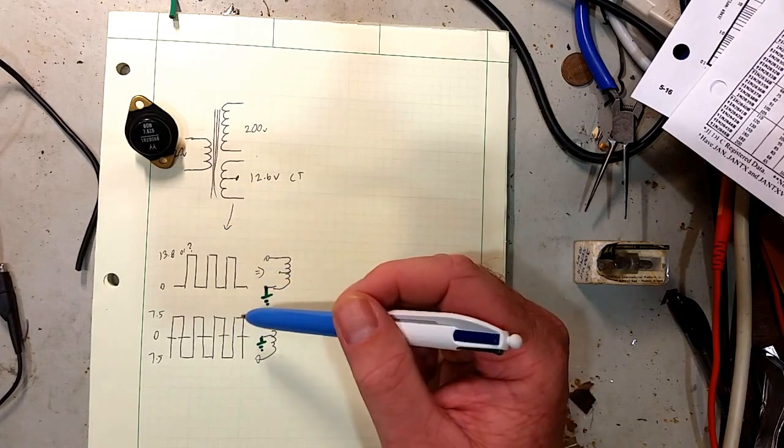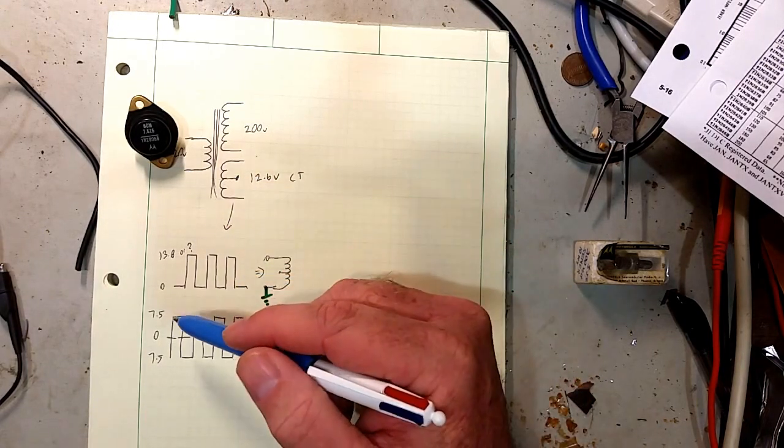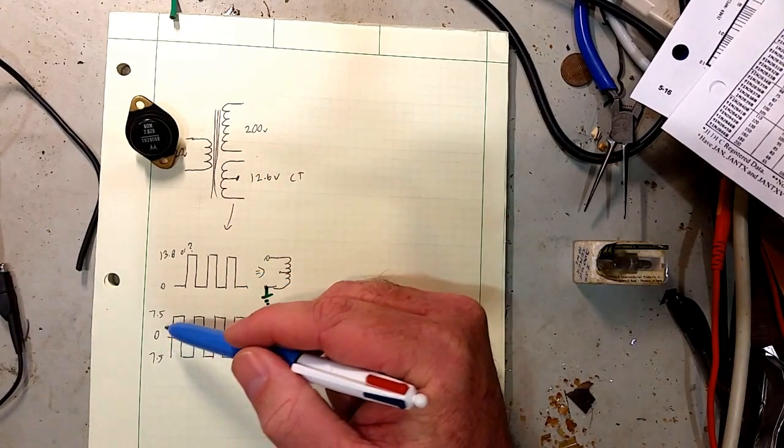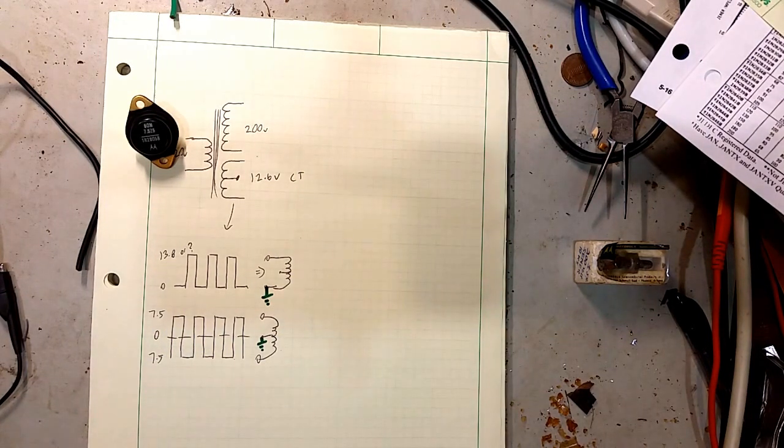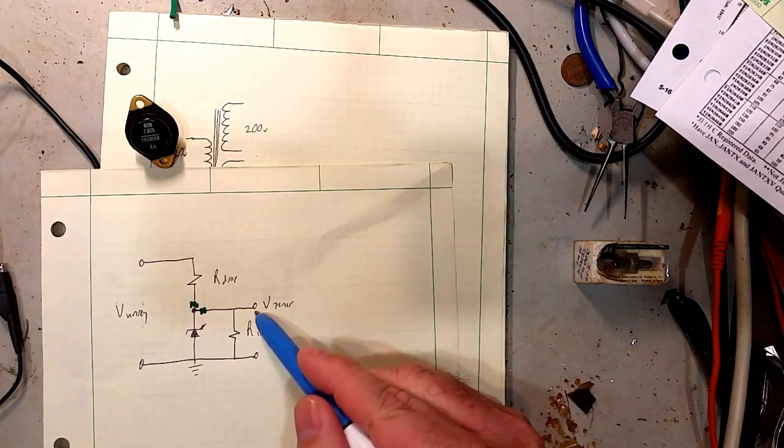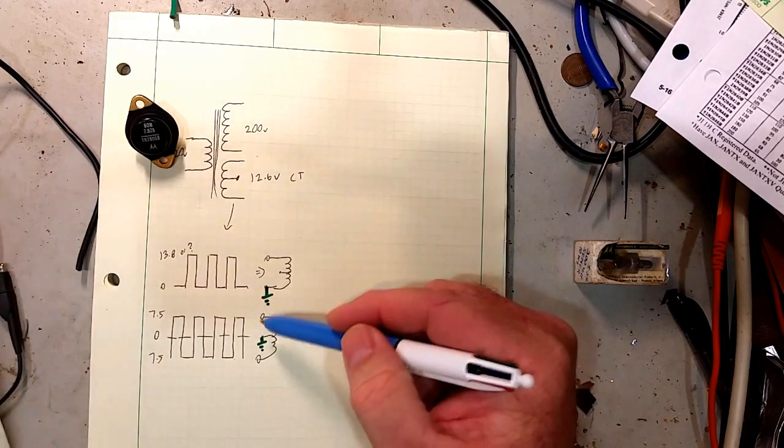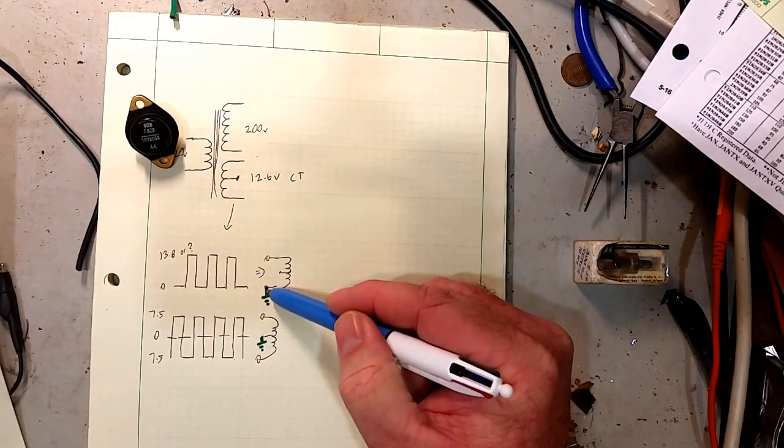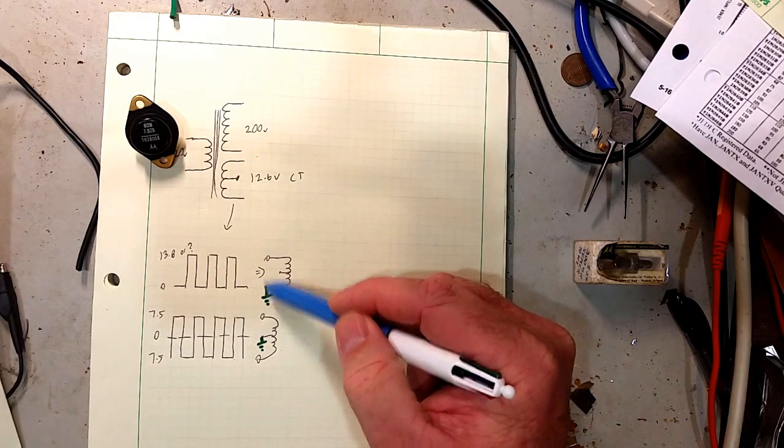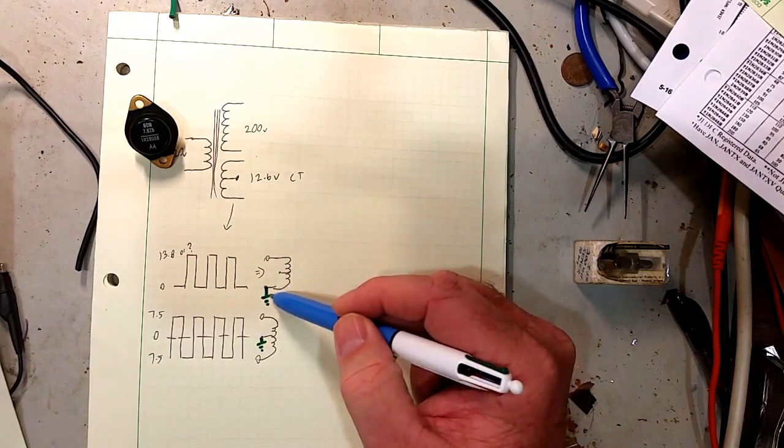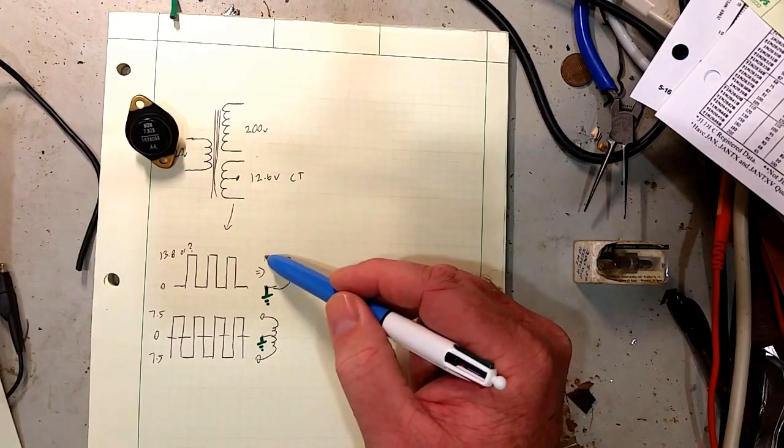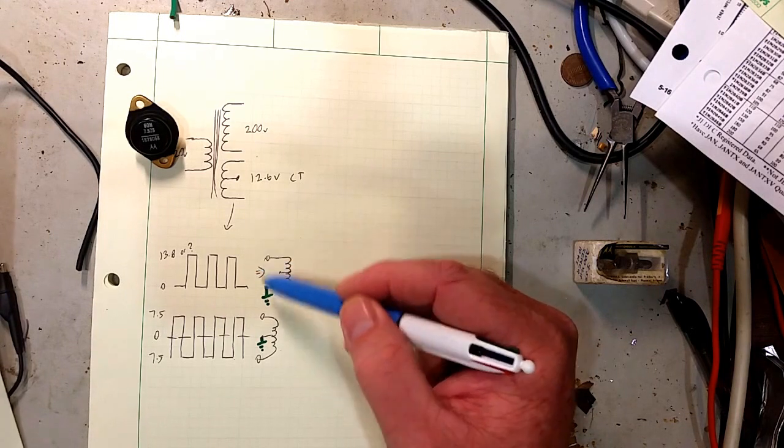So with the 7.5 volt Zener, what we could do is actually take the output of that original circuit that we looked at. So basically this, the load, and we would normally, if we were using the full 13.8 across this 12.6 volt input, we would ground one end and the other end would have 13.8 either on or off.